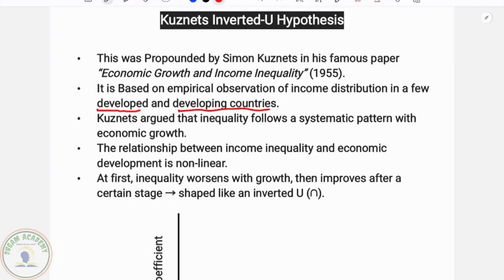Kuznets argued that inequality follows a systematic pattern with economic growth. The relationship between income inequality and income development is nonlinear — it is curve type, not a straight line. At first, inequality worsens with growth, then improves after a certain stage, shaped like an inverted U.